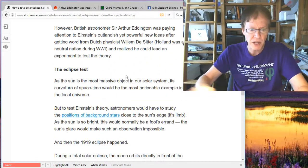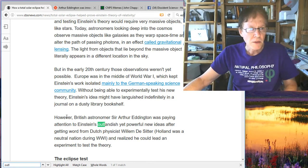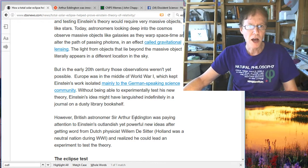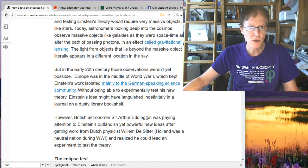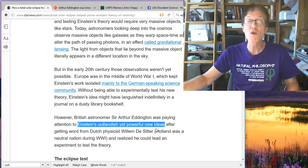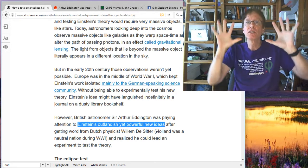He actually talks about it, it's outlandish. Let's see if I can find that, outlandish. There it is. However, British astronomer Sir Eddington was paying attention to Einstein's outlandish, but powerful new ideas. Look at the words they use, outlandish. He's a rebel. He wasn't even a scientist. He was in the patent office. This is the rebel thinker coming out with powerful new ideas.